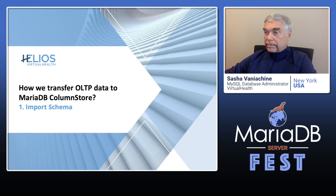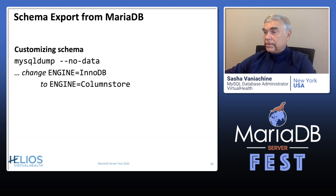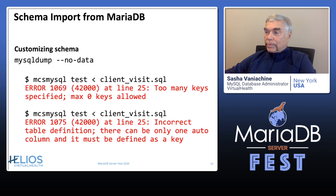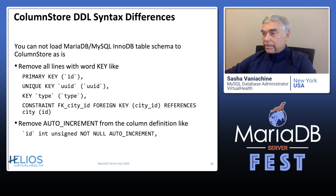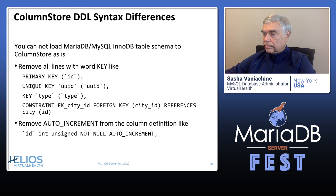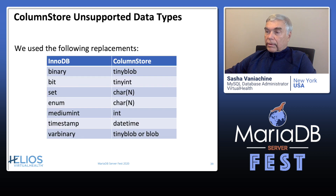In practice, one must transfer the database schema as a first step. In a first approximation, it is rather simple — you just replace the engine in the DB with ColumnStore. However, this doesn't work out of the box. These slides list certain steps needed to eliminate DDL differences, such as the absence of explicit indices in the ColumnStore. Also, some data types are not supported, and we used the replacements listed on this slide.